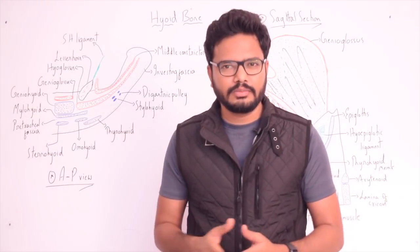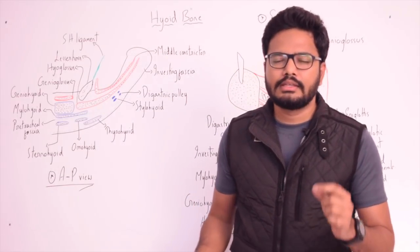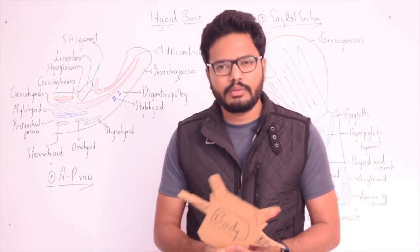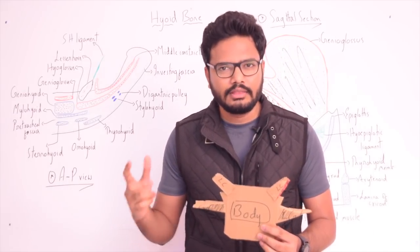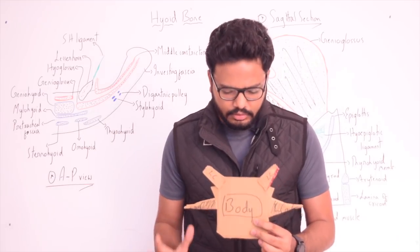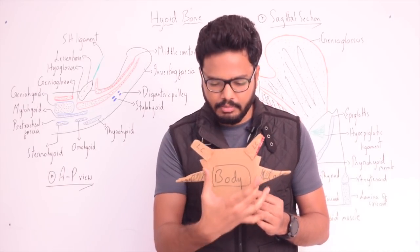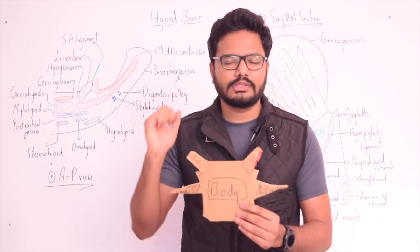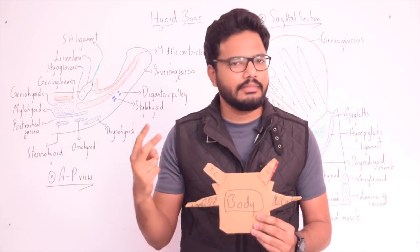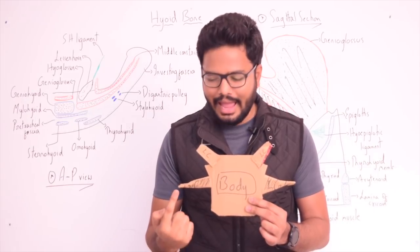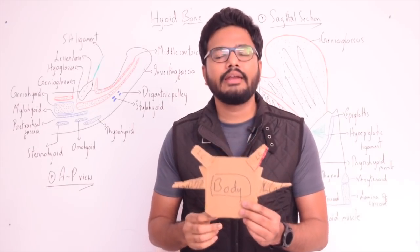Today we'll have a brief overview of the hyoid bone including attachments, the developmental aspect, and the clinical relevance. The hyoid bone develops from the second and third branchial arches. I've prepared a cardboard model to help visualize the surfaces. The upper part of the body and the lesser horns are developed from the second branchial arch, whereas the lower part of the body and the greater horns develop from the third branchial arch.